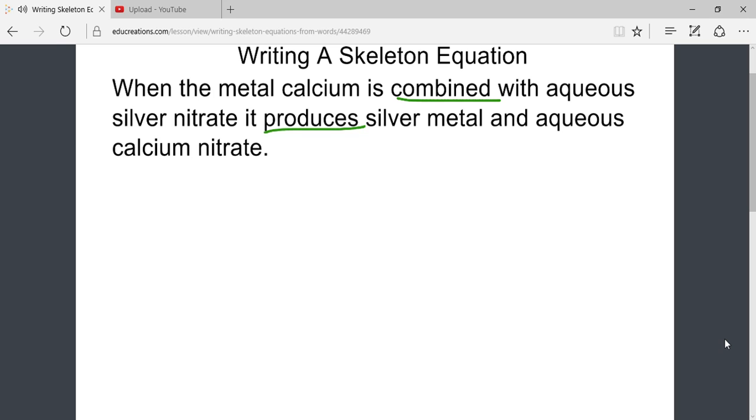Recall that an arrow separates the reactants from the products in a chemical reaction. The skeleton equation is simply an equation that describes the correct formula for each reactant and each product in the reaction.